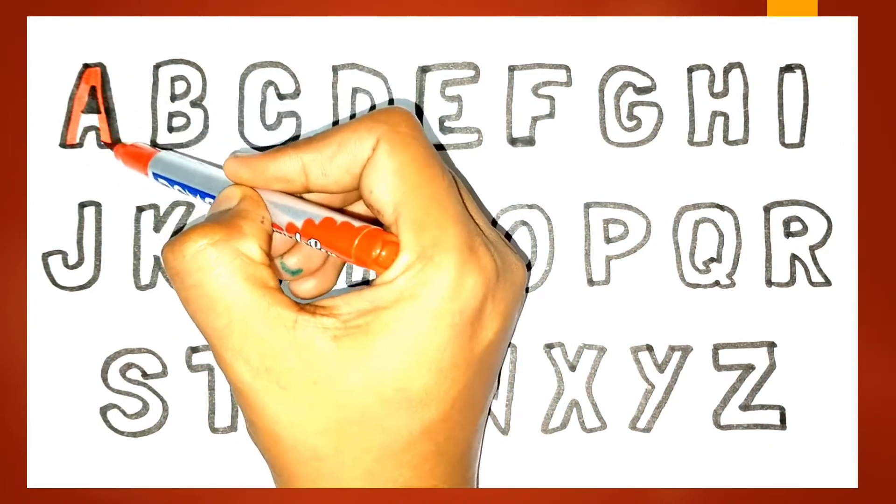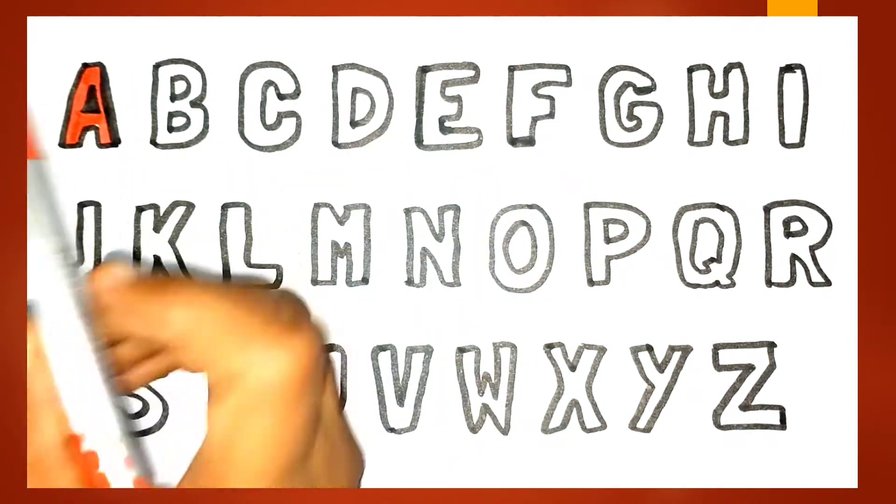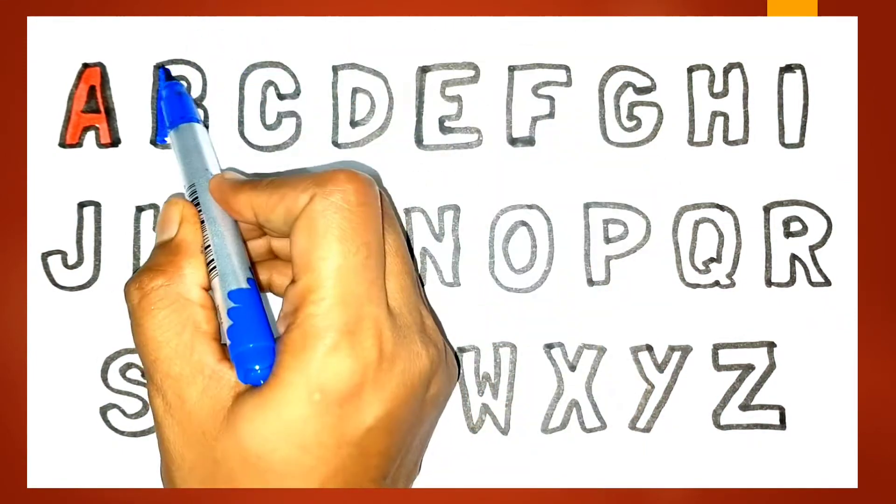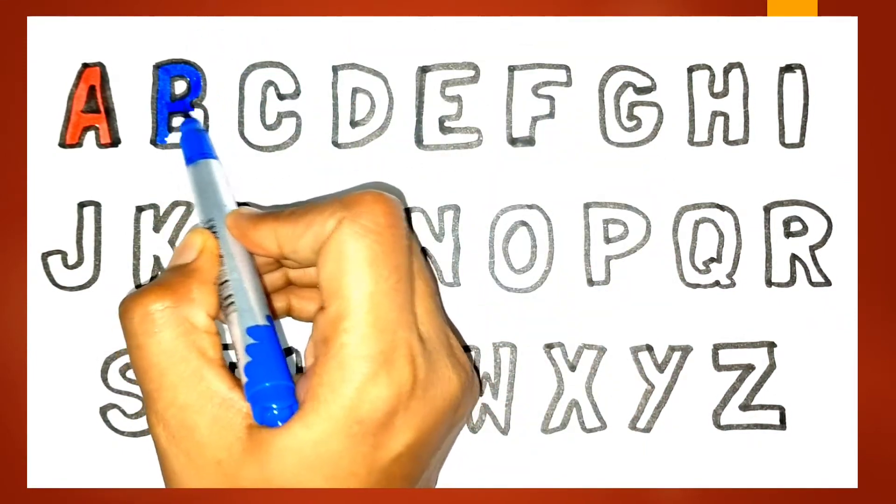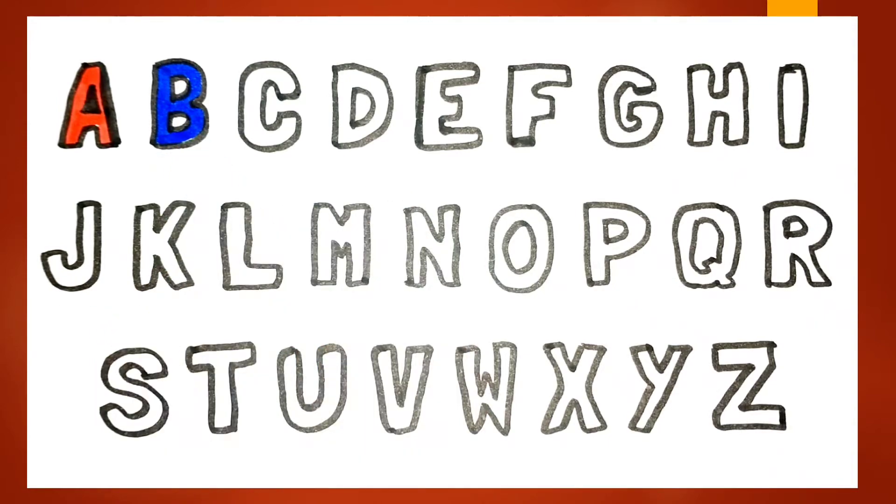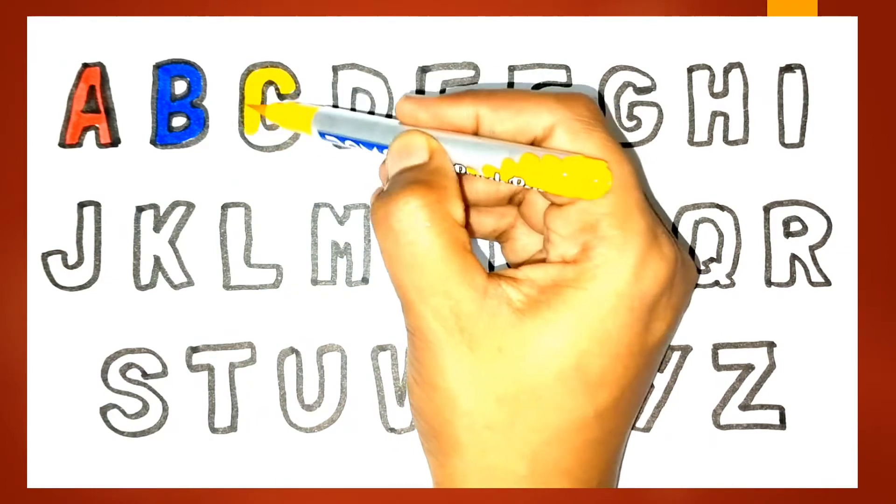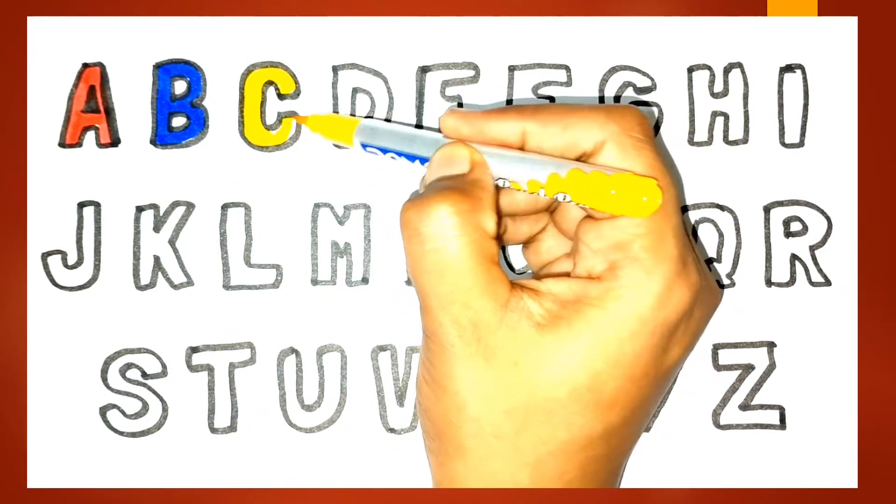A for Ant. B for Balloon, Balloon means Gubara. C for Cake, Cake means Cake.